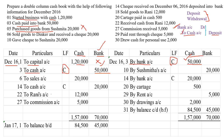Moving on: sold goods to Dhinakar and received a check of 20,000 rupees. We are selling goods to Dhinakar — when goods are sold, cash will come into the business, so we are recording it in the debit side — to sales. But we have received a check, and it is not mentioned that we deposited the check on the same day. Since the check is received but not deposited, we are treating it as a cash receipt only and recording it in the cash column.